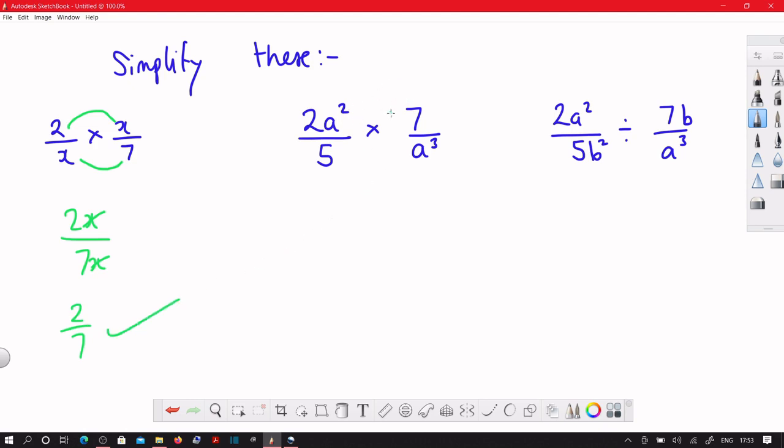This one here, it's timesing again. So numerator times numerator, denominator times denominator. On the numerator, we have 2 times 7 is 14, and then you've just got a squared. On the denominator, you've got 5 times a cubed.